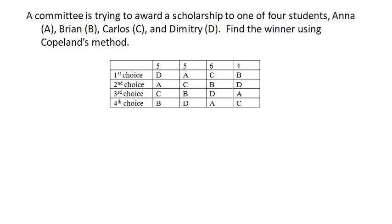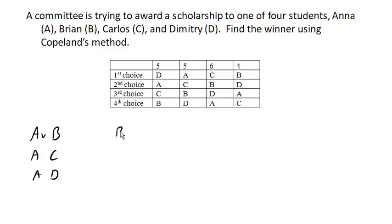We're trying to award a scholarship to one of four students: Anna, Brian, Carlos, and Dimitri. We're going to use Copeland's method here. So we can make our comparisons — we're going to compare A versus B, A versus C, A versus D, B versus C, B versus D, and finally C versus D.